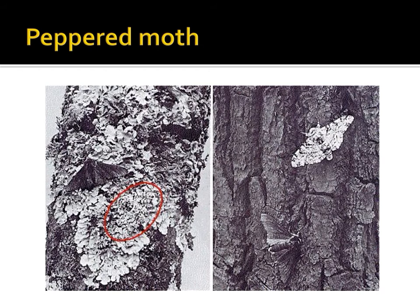While the fossil record, biochemical similarities, and anatomical structures can be used to compare two organisms, there are excellent observable examples of evolution in action — providing, in my example at least, the best evidence for the process. The first such example involves the peppered moth. Some peppered moths are light-colored, shown most clearly on the right, while others are dark-colored, as best shown on the left. When the environment changed for the peppered moths and later changed back, the peppered moth that best blended into the environment became more and more common in the population. There is a tremendous amount of information available on this topic.